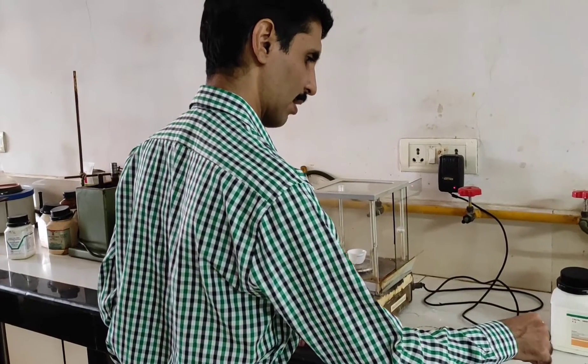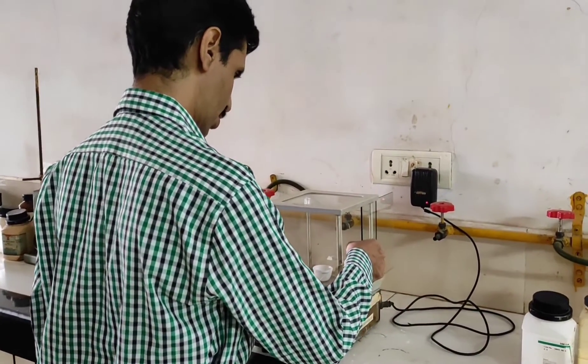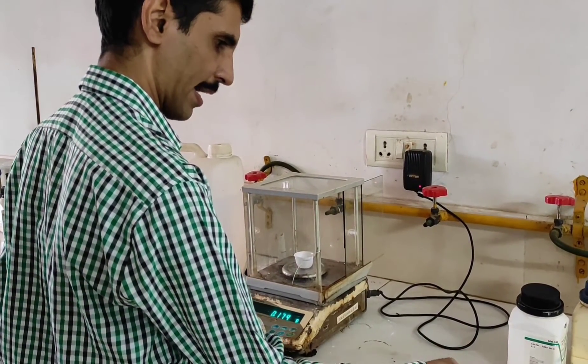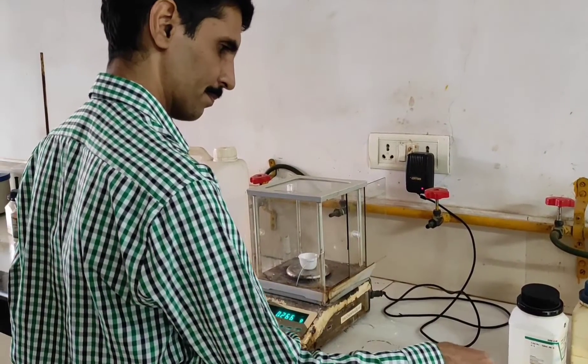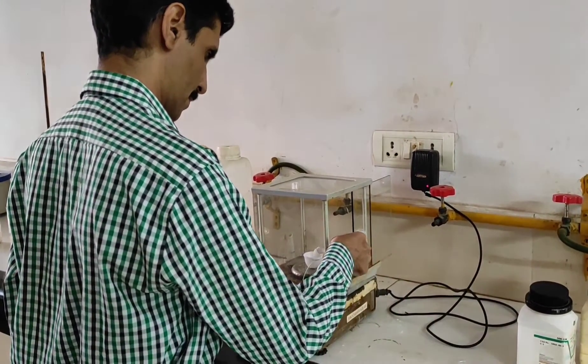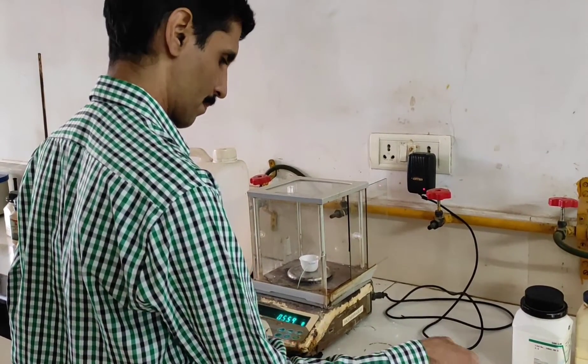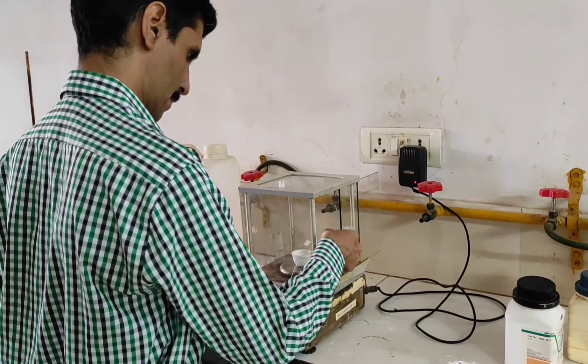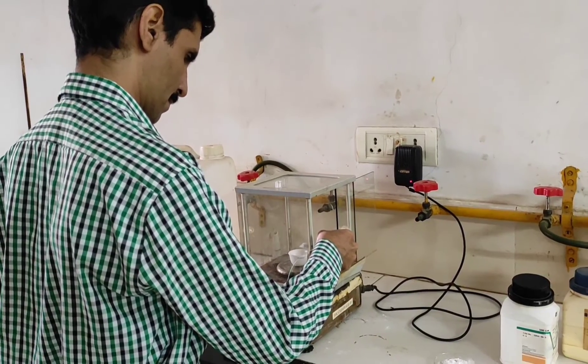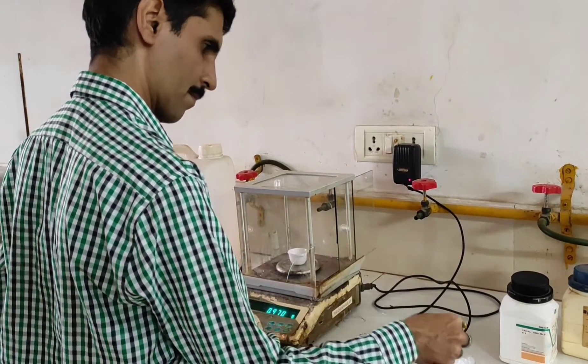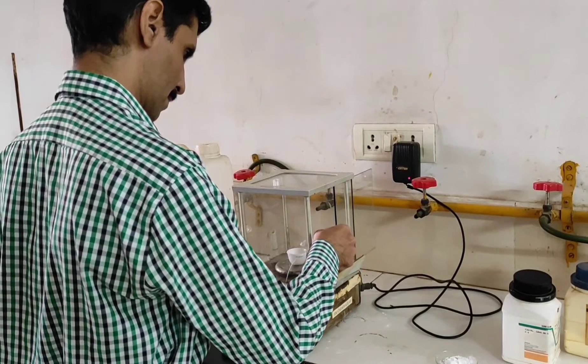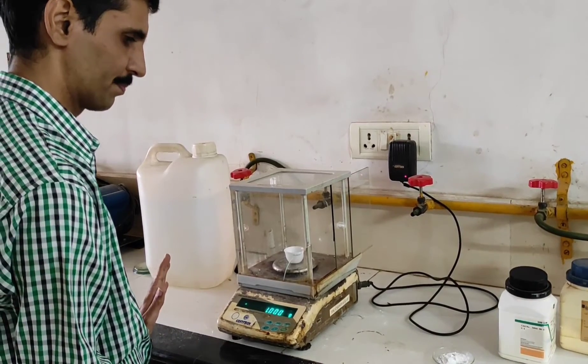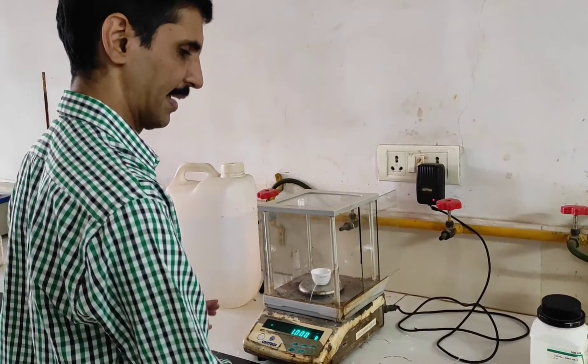And now, I will be adding very slowly the mixture into the crucible. So this is it, my dear friends. We have one gram of the mixture. And we will proceed for the heating process.